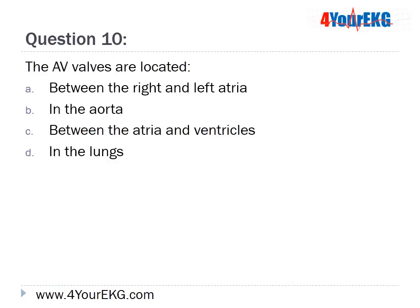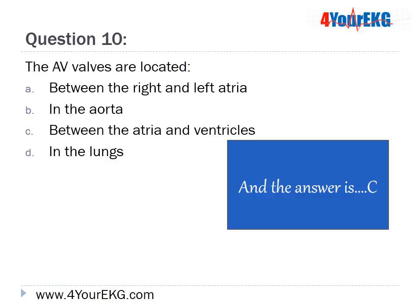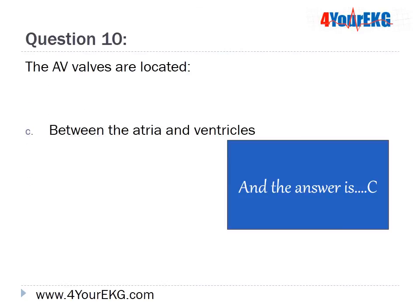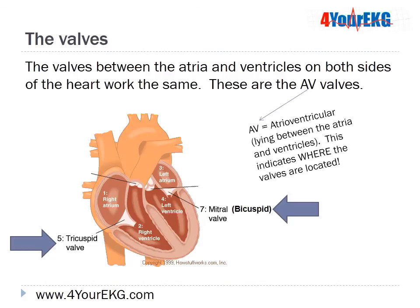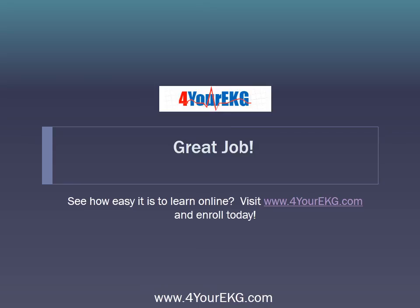Question 10: Both AV valves are located — A. Between the right and left atria, B. In the aorta, C. Between the atria and ventricles, or D. In the lungs. The answer is C — Between the atria and ventricles. The valves between the atria and ventricles on both sides of the heart work the same and are called AV valves, or atrioventricular valves, because they lie between the atria and ventricles. Wow, you did a great job! Visit ForYourEKG.com and enroll in our EKG class today!